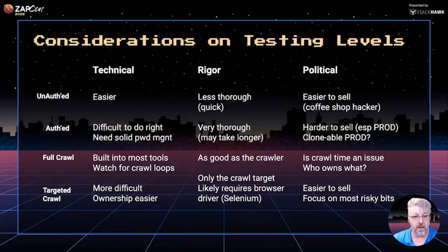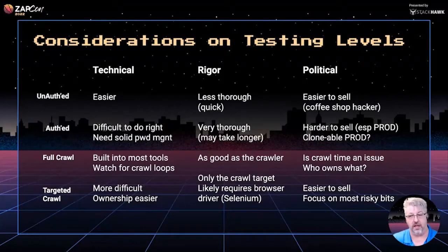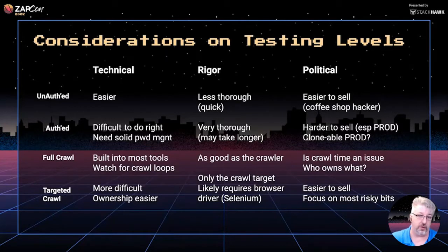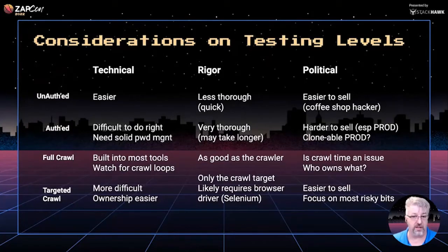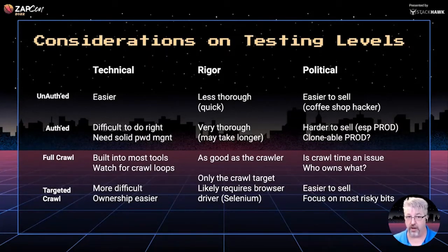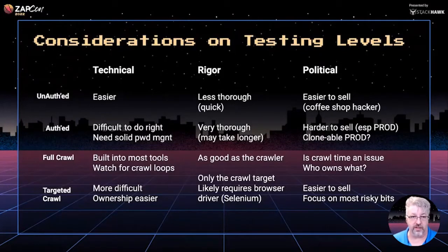Moving to the authenticated scan: this can be difficult to do right, given all the password management problems mentioned earlier. Can you get credentials dynamically? Do they actually match your environment? Do you have multiple roles requiring multiple credentials? It gets complicated quickly. From a rigor perspective, this is a much more thorough test — obviously it takes longer, particularly if all you have is a login page for unauthenticated access and the rest is behind that. This can be harder to sell politically; if you're testing in prod, you could mess up prod, which nobody wants. If you're lucky, you might have a clonable prod — a mini prod — but it's obviously a harder sell.